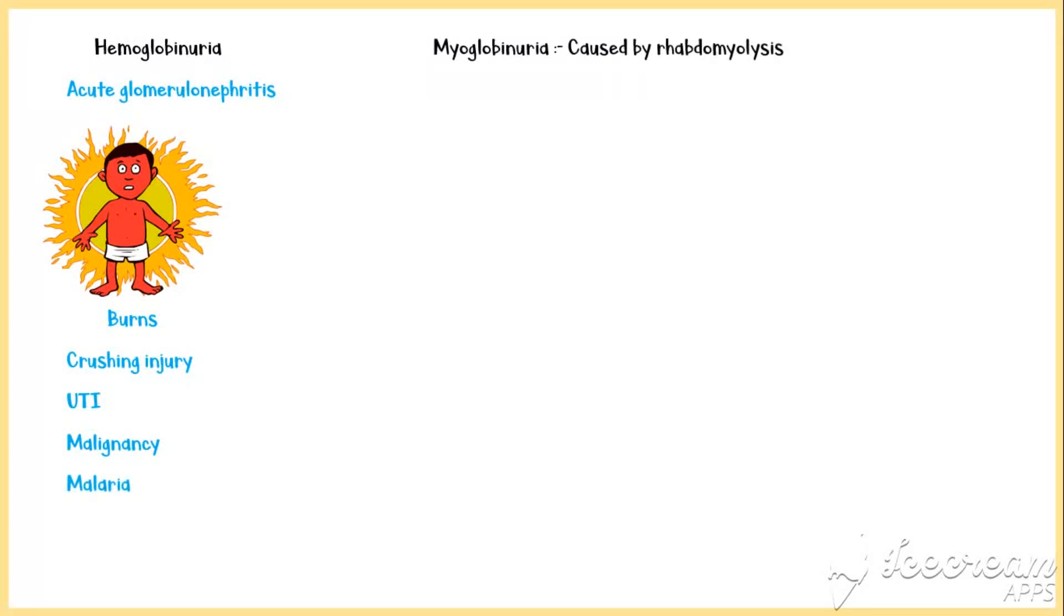Myoglobinuria, which is generally caused by rhabdomyolysis, is another cause of red urine. Similarly, disorders related to hemoglobin production such as porphyria can result in red urine. This red color may change to purple or black with sunlight exposure.